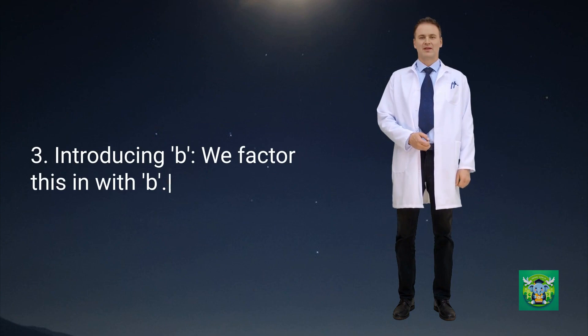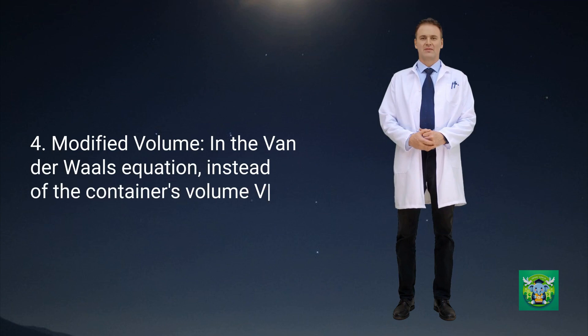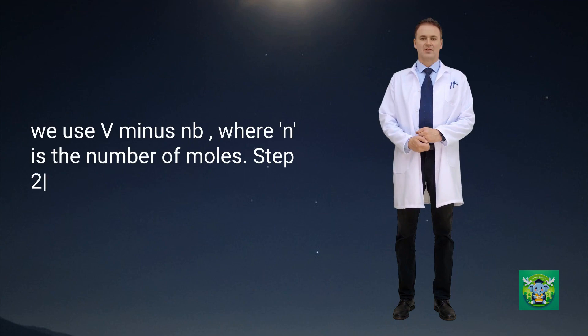Introducing B, we factor this in with B. B is a constant representing the volume excluded by a mole of gas molecules. Modified volume: in the Van der Waals equation, instead of the container's volume V, we use V minus NB, where N is the number of moles.